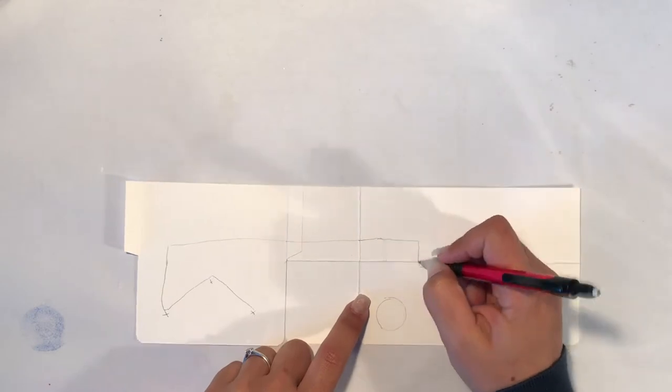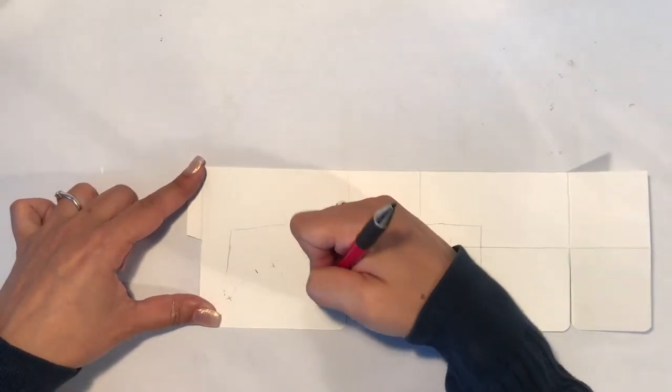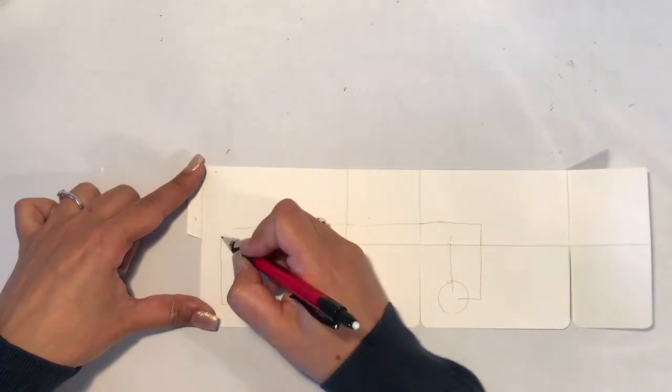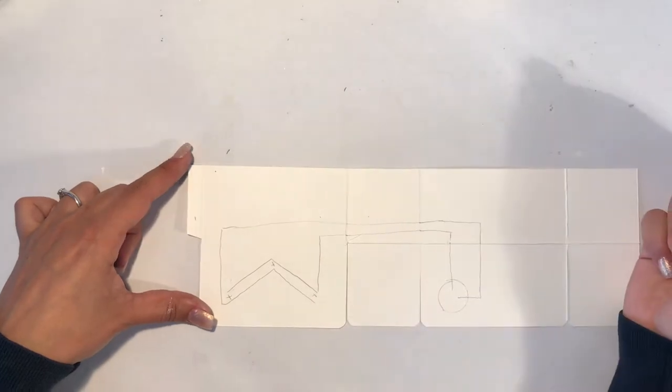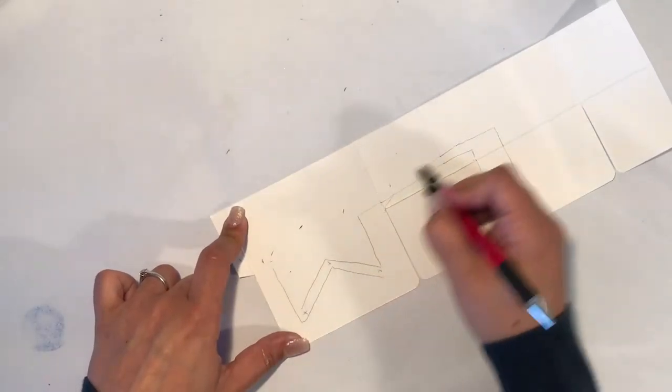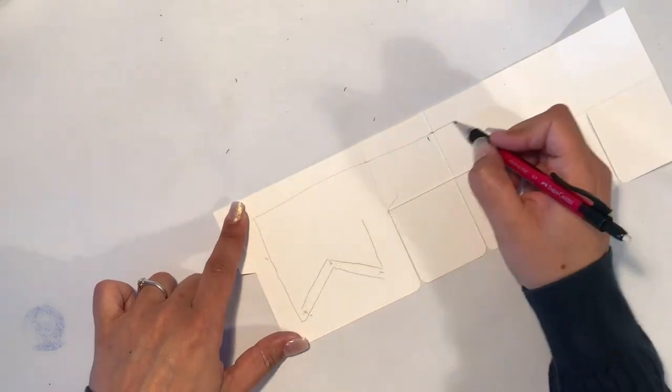When I connect everything before with my pencil I can figure out if it works or not and as you can see I just have to erase sometimes my lines and correct them. If I would have started directly with my copper tape I had to throw everything away and start all over again.